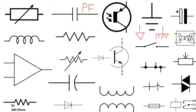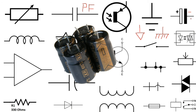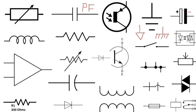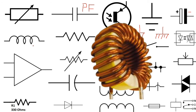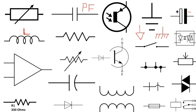This is a capacitor, and this time we have a plus sign here and minus here. So this is a polarized capacitor — not like the previous one. This is a polarized capacitor or electrolytic capacitor. This is the inductor, the symbol of the inductor. We always represent the inductor with the letter L.